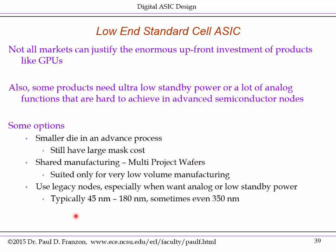Another alternative is to use the legacy node, which tends to be particularly true when you want analog functionality or very low standby power. This is typically in the 45 to 180 nanometer range, sometimes even up to 350 nanometer. The 45 and 65 nanometer nodes are particularly good for analog, and these older nodes give you low leakage transistors and thus low standby power — the bigger the transistor, the lower its leakage current.